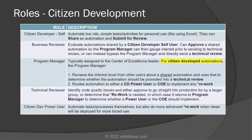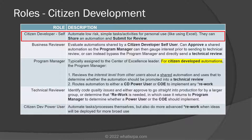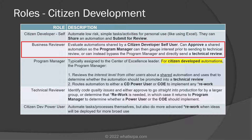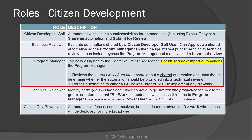The roles for citizen development are slightly different. The citizen developer self can automate low-risk, simple tasks and activities for their own personal use, almost like using Excel as a productivity tool. They can then share an automation and submit it for review. The business reviewer will evaluate automations shared by citizen developer self users, and they can approve a shared automation so the program manager can gauge interest prior to sending it for technical review, or they can bypass the program manager and directly send it for a technical review. The program manager reviews the interest level from other users about a shared automation and uses that to determine whether it should be promoted into a technical review, then routes it either to a citizen developer power user or to the COE to implement any rework.